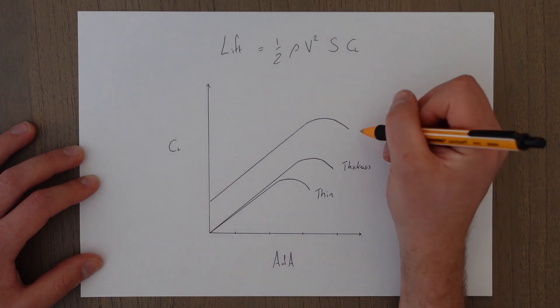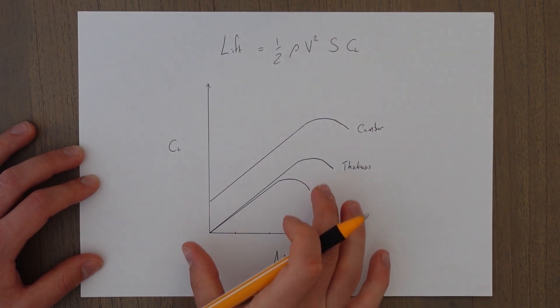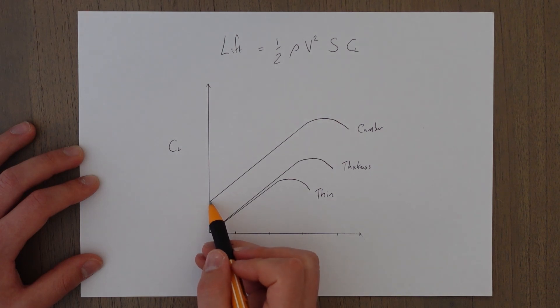By increasing the camber we move this graph up, and it's possible to create a coefficient of lift even at zero angle of attack.